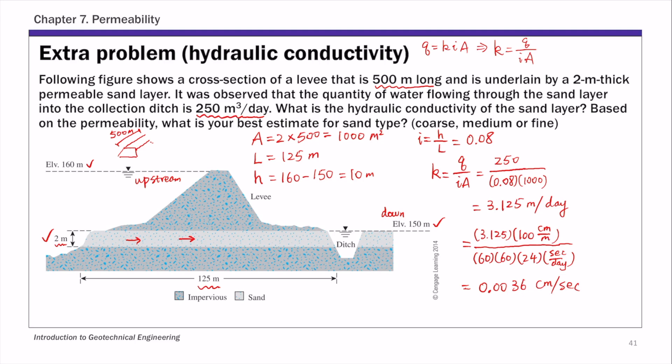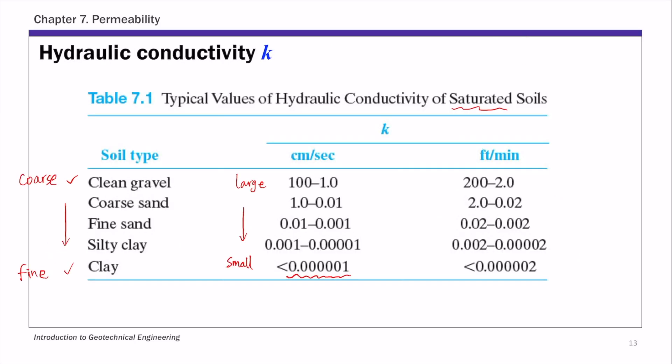The problem also asks, based on the permeability you just calculated, what is your best estimate for sand type? Remember Table 7.1. This is Table 7.1, and it gives you the soil type and typical values of k, hydraulic conductivity.